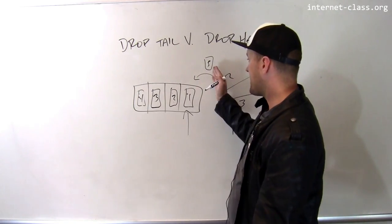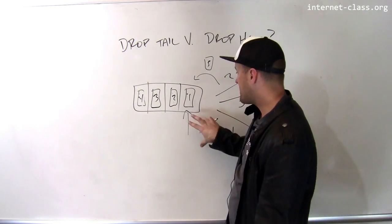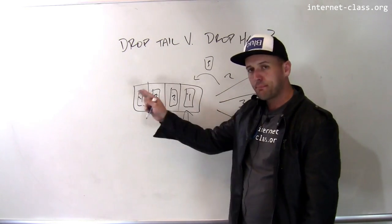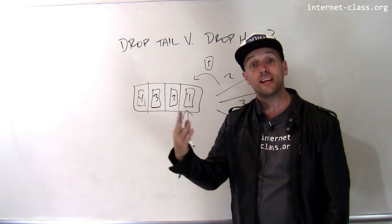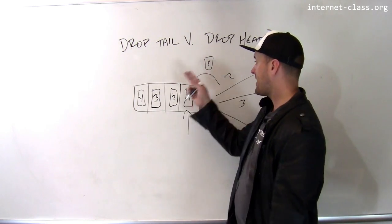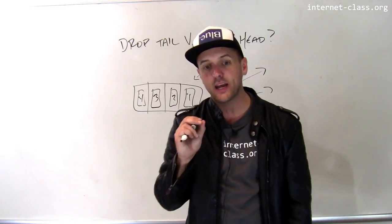But what happens is if I drop this packet, the people that are using the network that are transmitting too quickly, they get a signal faster than if I drop this packet. And by dropping packets from the head of my queue, that will cause people that are overloading the network to slow down more quickly.